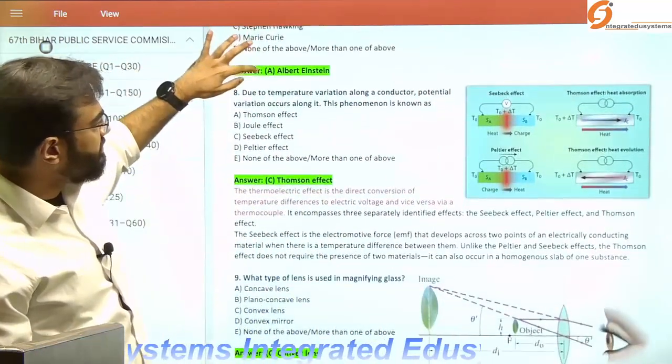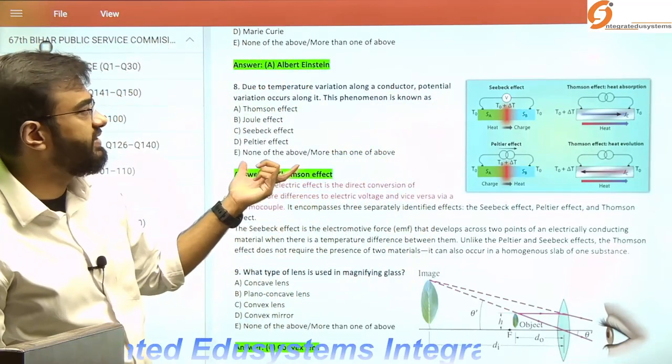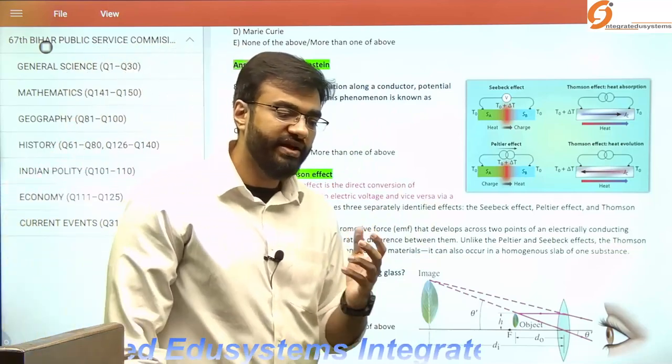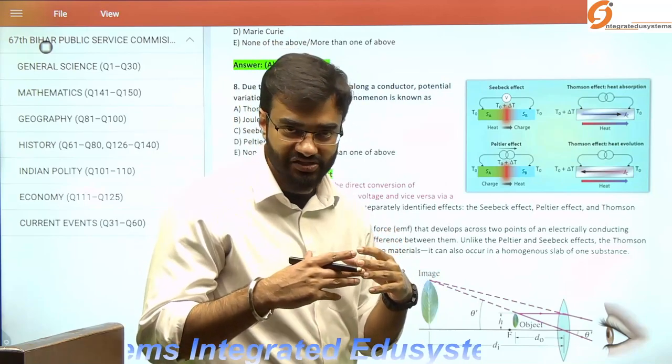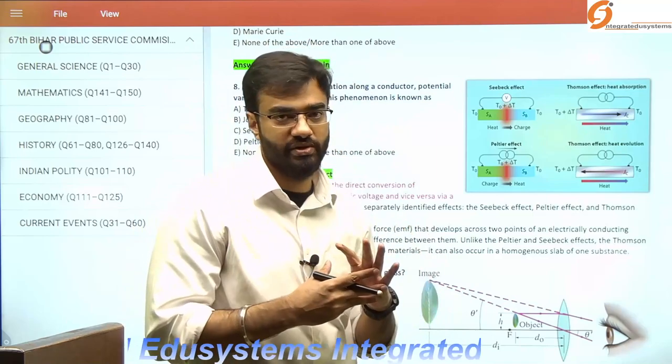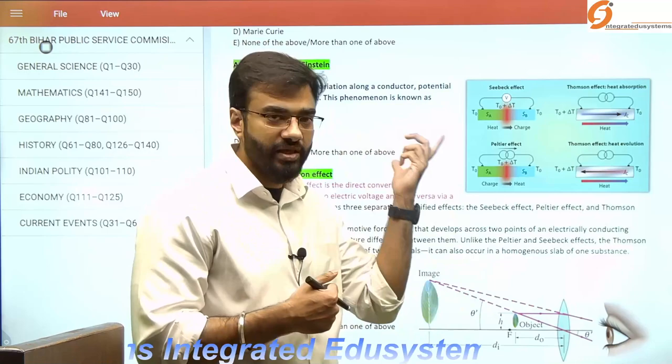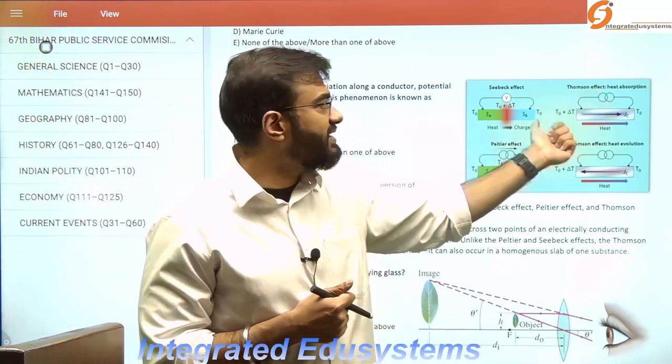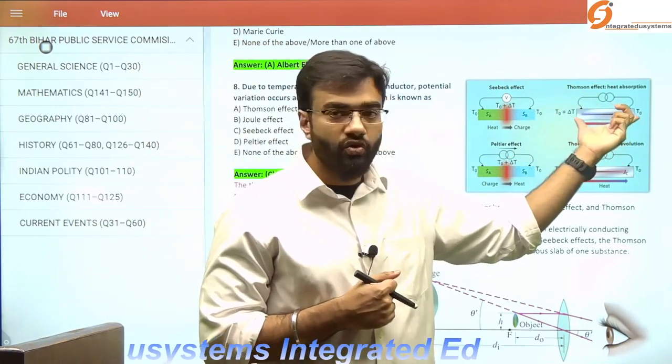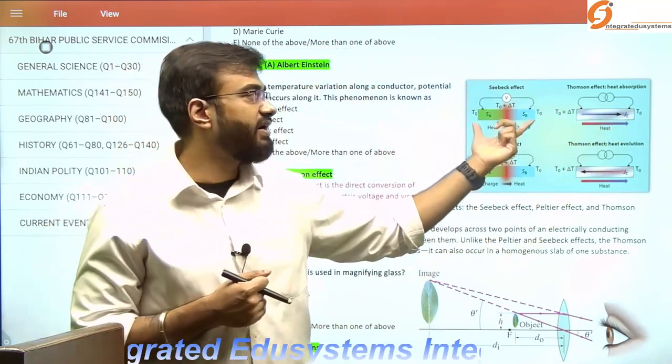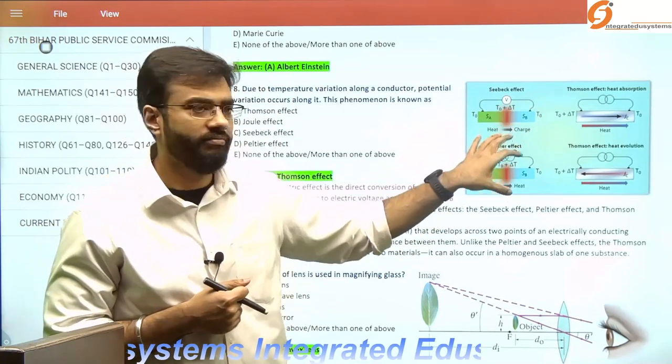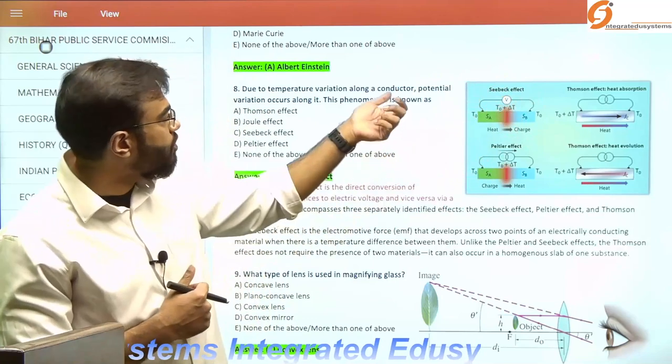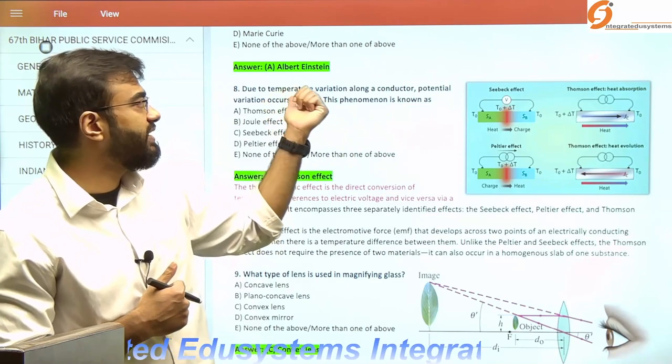Theory of relativity—there's no rocket science in that. Now, the Thompson effect is slightly complicated. It's a type of thermoelectric effect. When electricity passes through a conductor, it produces heat, or vice versa. Thompson, Seebeck, and Peltier effects are examples. The major difference is that Thompson effect involves only one type of conductor, whereas Seebeck and Peltier use two different conductors like copper and iron.